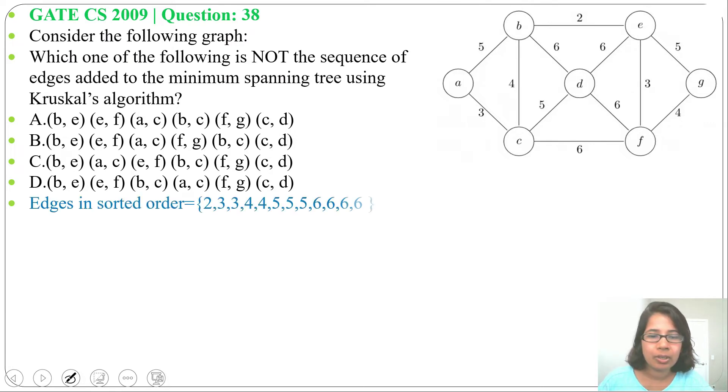So first we'll write all the edges in sorted order. Minimum weight is 2, first we'll include weight 2 edge that is BE. In every option first edge is BE. Next we'll include weight 3, that is AC and EF. Both weights are same and both are not creating any cycle so we'll include both.